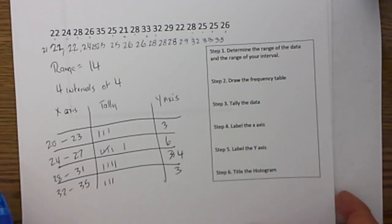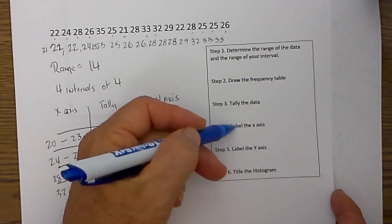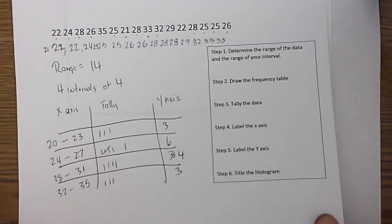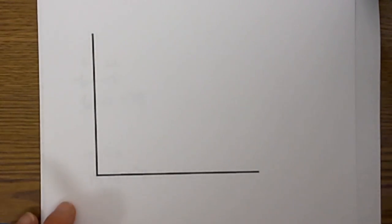At this point all we do now is we label the x axis, label the y axis, and title the histogram. So let's go ahead and do that. I have pre-made a graph for you.